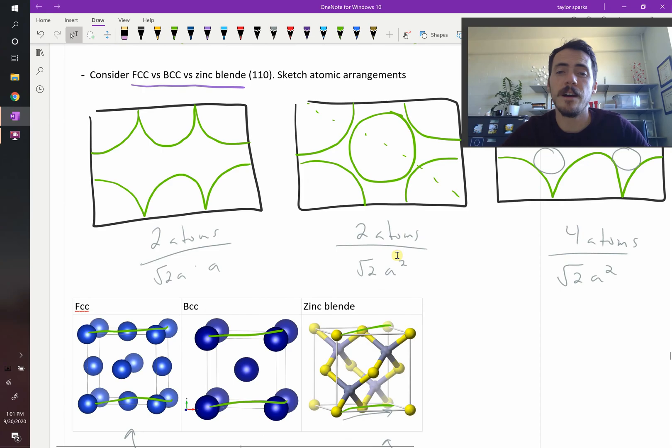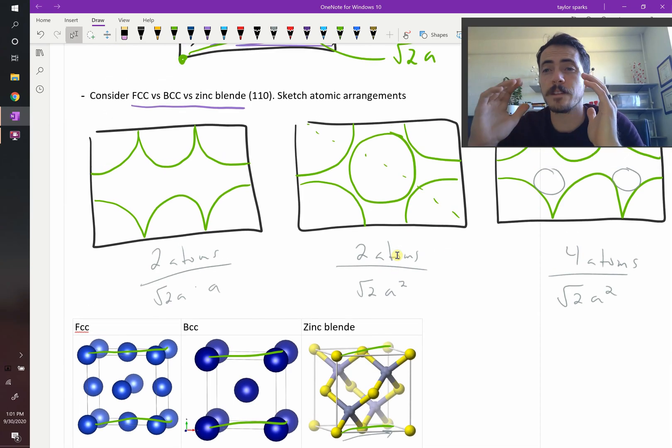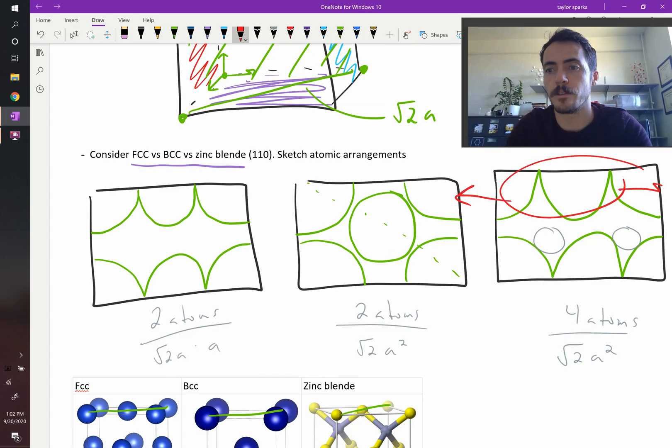Why do we care about this? Because in these structures, if you can get the highest linear density plane in the highest linear density direction, that's where you get something called slip. Slip is when these atoms move past one another. For example, this group of atoms might slide past, to the left or to the right, this group of atoms. If they slide past them, then you can get slip or deformation occurring. Much more on that in a few chapters.